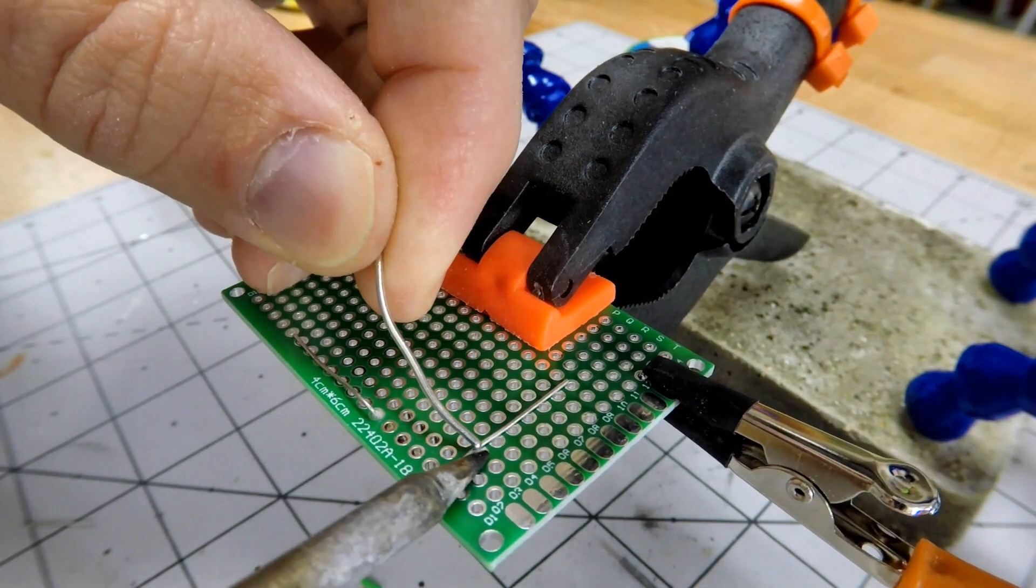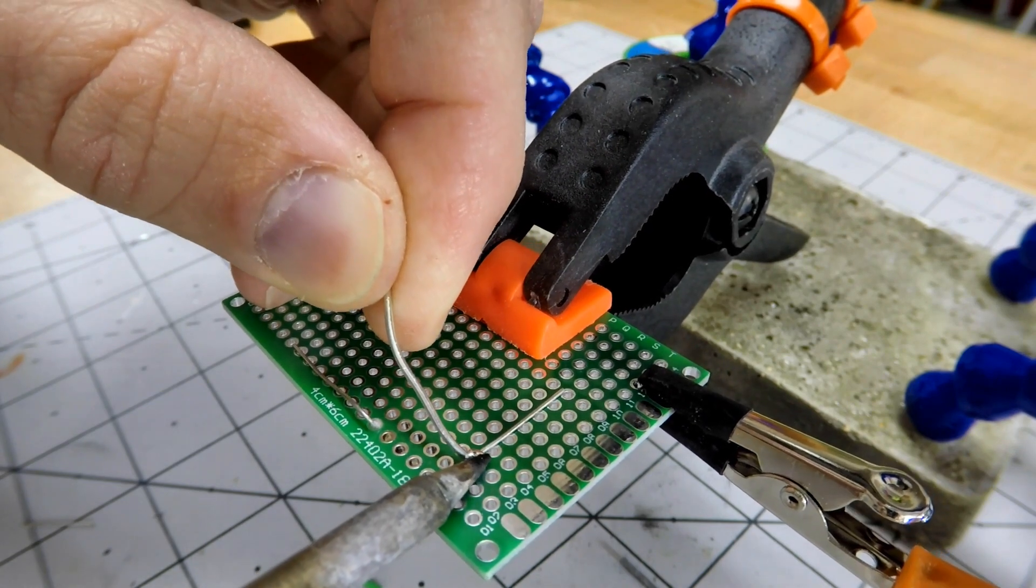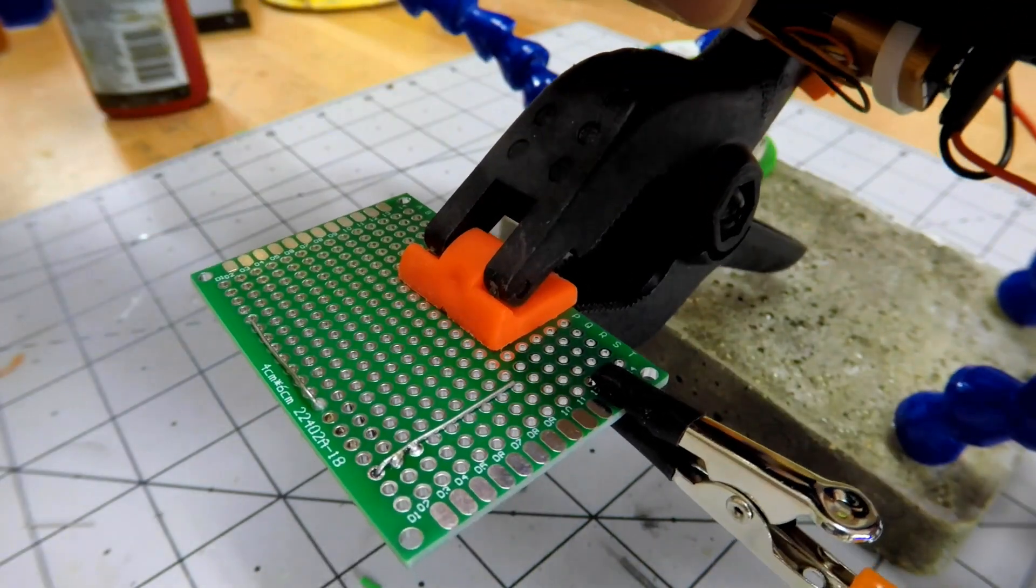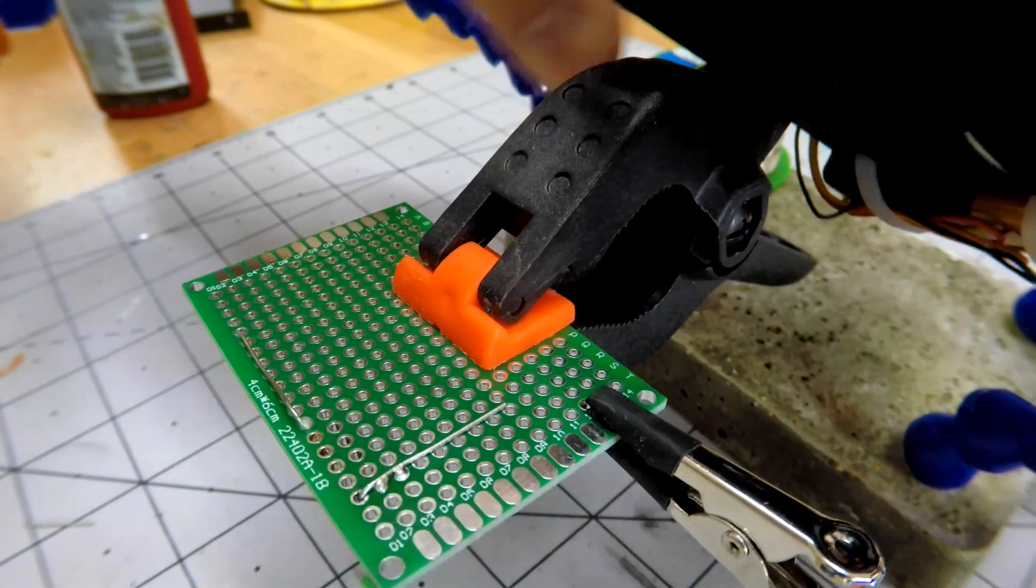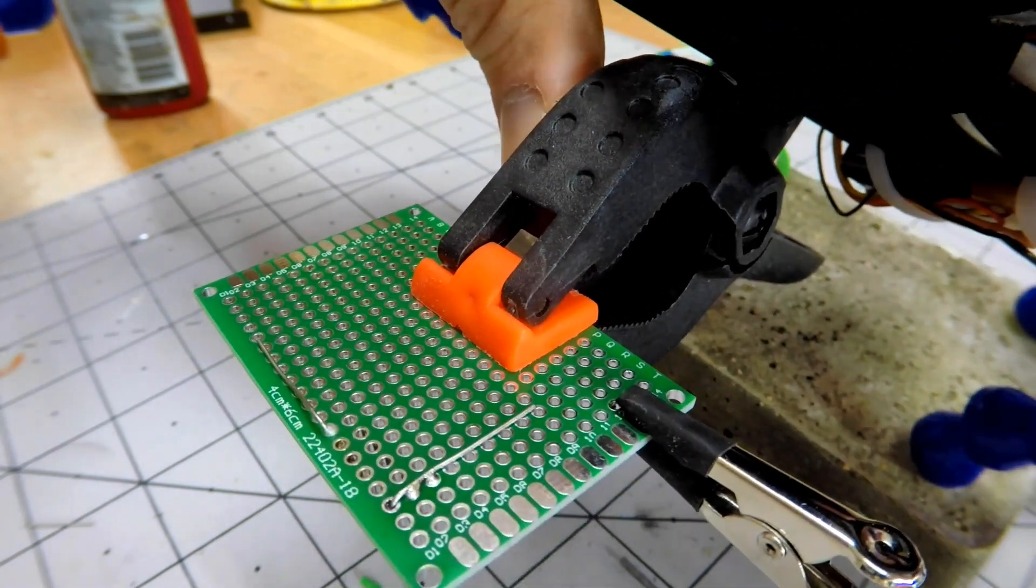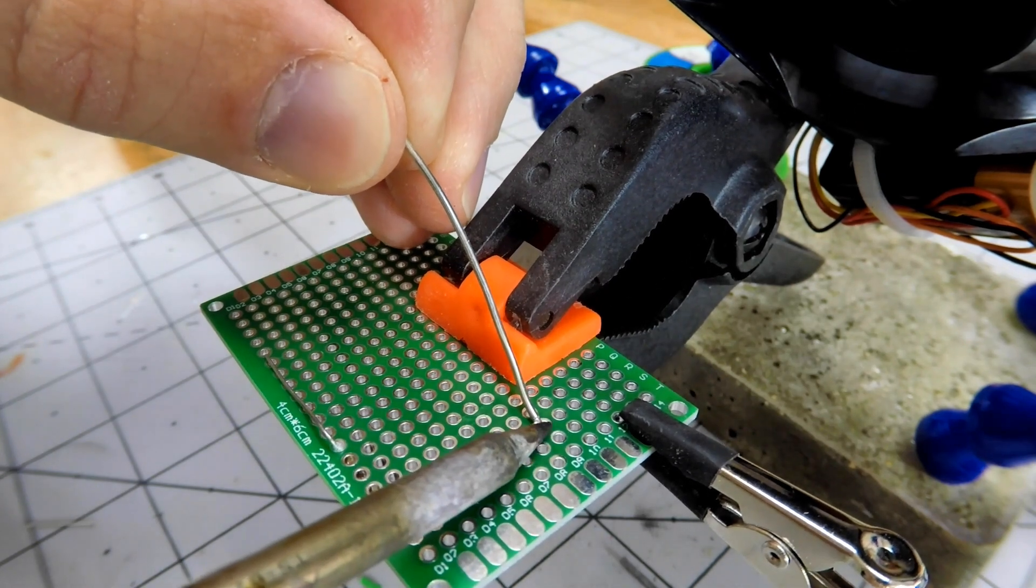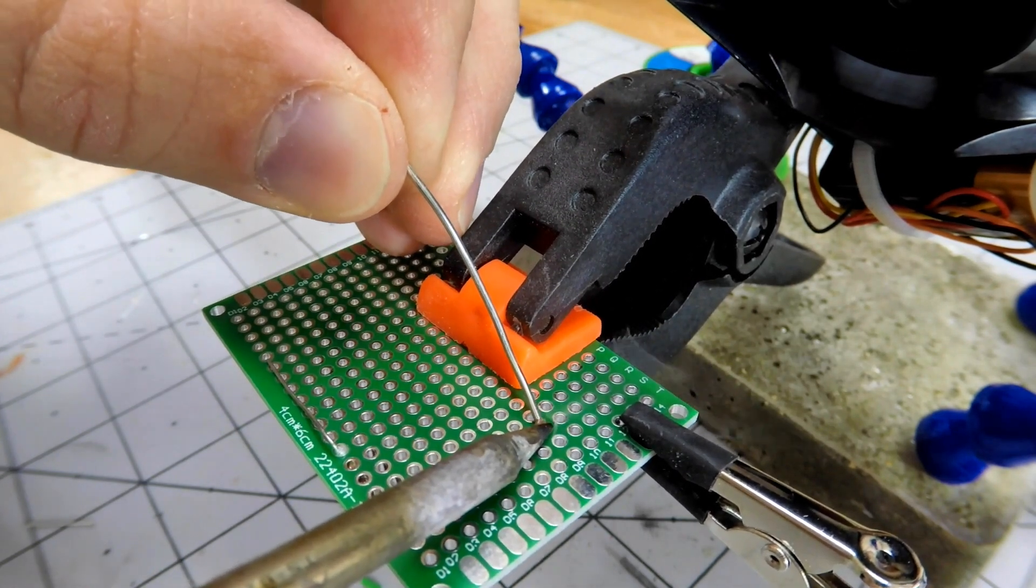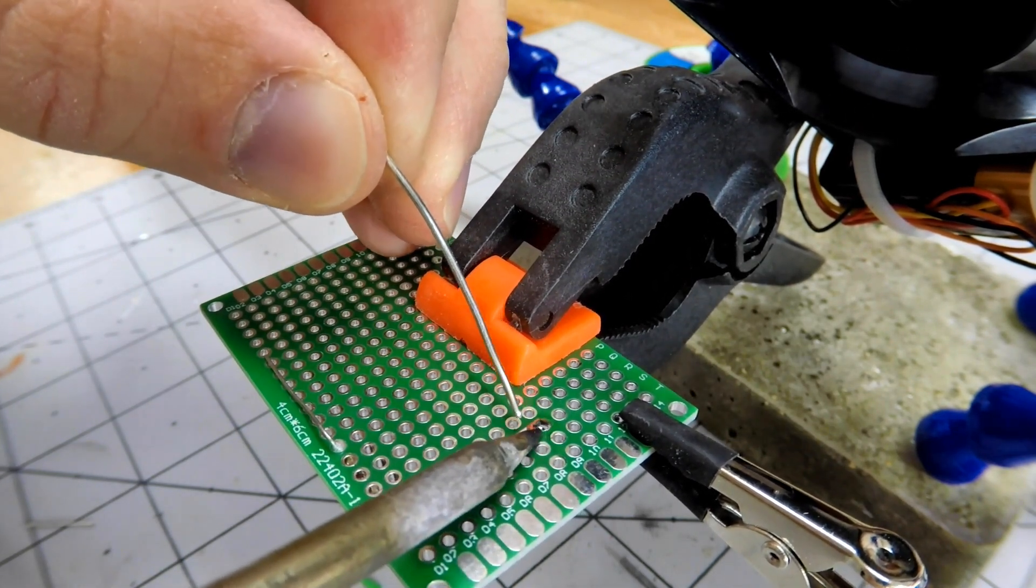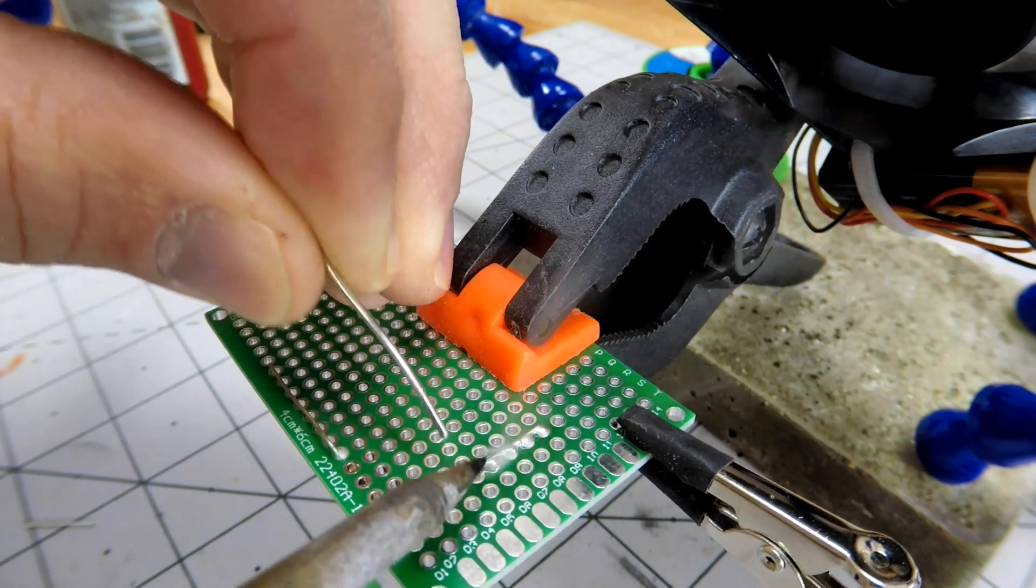The fan, however, if it's in the wrong direction, it actually pushes the smoke towards you. So you got to make sure that's in the right direction. Maybe I'll put a big red arrow or something. It does have little arrows on it, but it's just not that visible. So there are a few ways that this solder squid could be improved, but overall, I'm quite happy with the design.